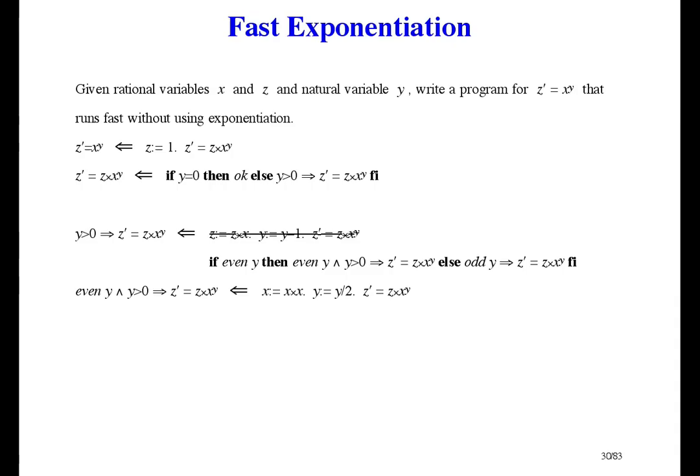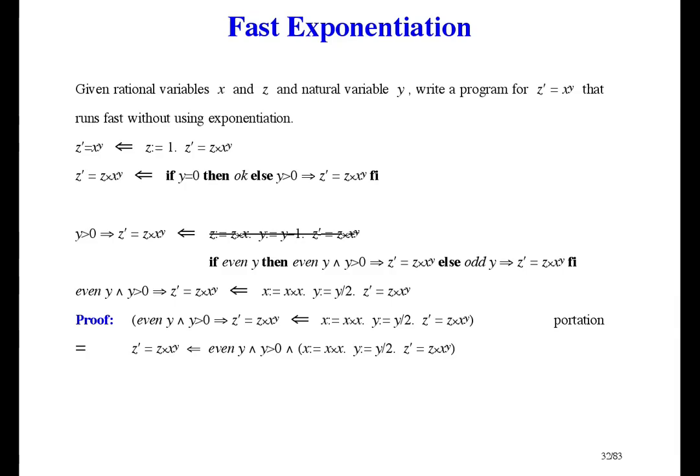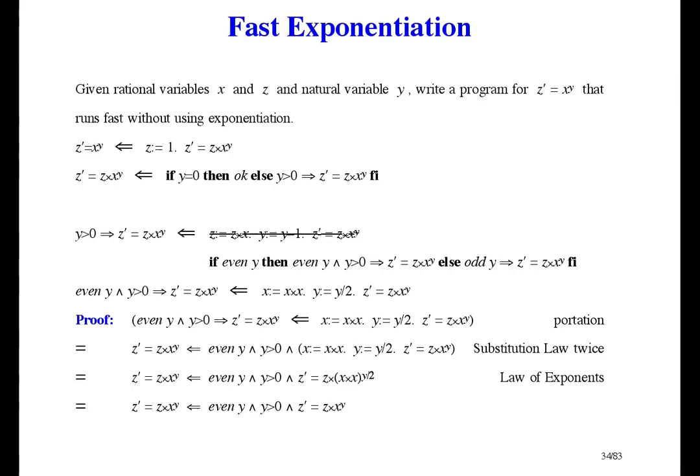We square X and divide Y by 2, and then finish the job. Well, we're not allowed to square so we multiply X by itself. Here's the proof. Start with importation to get the antecedents together. Now use the substitution law in the bracketed part so it becomes Z prime equals Z times X squared to the power Y divided by 2. Then we can simplify that to just X to the power Y, and then by specialization we're done.